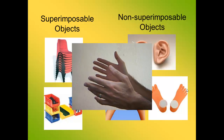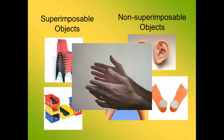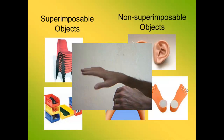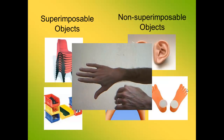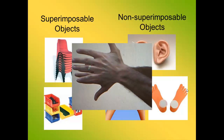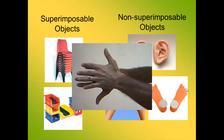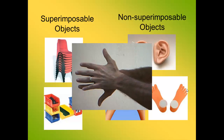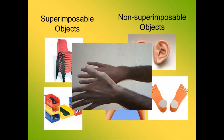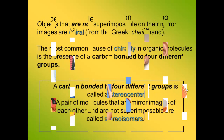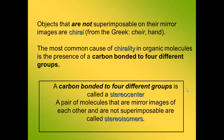Hands are not superimposable, meaning if you take your right hand and try to superimpose your left hand onto your right hand, the fingers do not line up. So objects that are not superimposable on their mirror images are chiral — for example, our hands, our ears, and our feet.